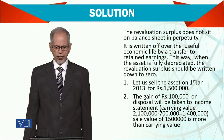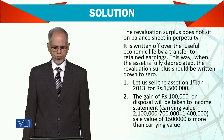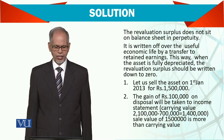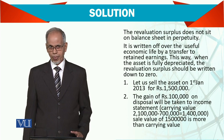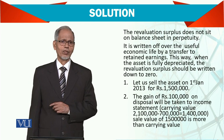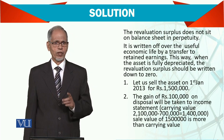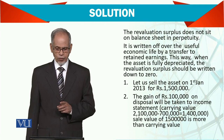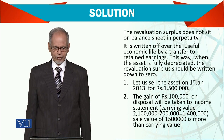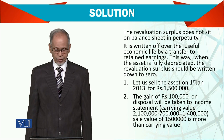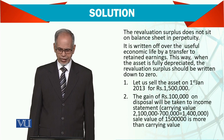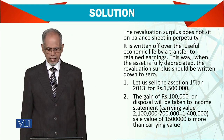When the asset is fully depreciated, the revaluation surplus should be written down to zero. Now let us assume we are selling the asset on 1st January 2013 for 1,500,000. The gain is calculated as 2.1 million less 700,000 depreciation for the year, giving a carrying value of 1.4 million. Since you are selling for 1.5 million, there is a gain of 100,000 on disposal, which will be taken to the income statement — not retained, because you are disposing of the asset.